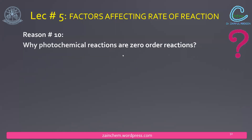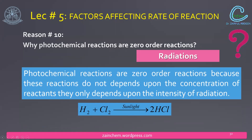Why are photochemical reactions zero-order reactions? The answer is that they depend upon radiation. These reactions are independent of the concentration of reactants — they depend on sunlight or light intensity. Because rate depends on radiation, when the rate expression is written in terms of concentration, the concentration term has a power of zero. Therefore they are categorized as zero-order reactions.